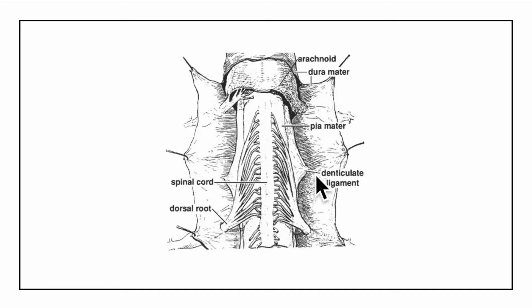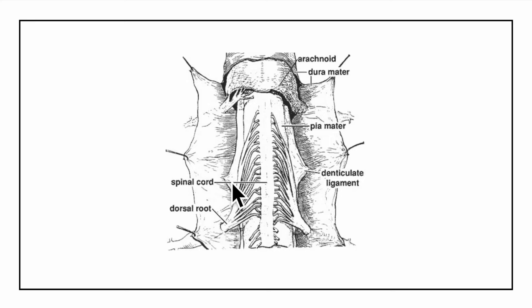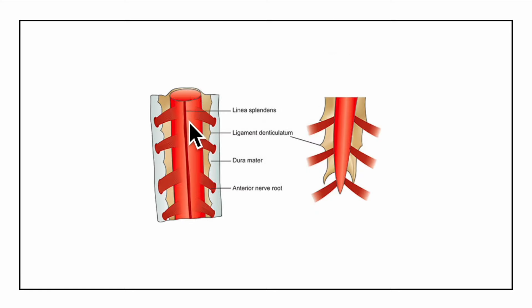The ligamenta denticulata, also known as the denticulate ligament, consists of 21 pairs of teeth-like projections. They fuse laterally with the arachnoid and the dura mater midway between the exits of the roots of adjacent spinal nerves. Here you can see the dorsal root of an adjacent spinal nerve and the denticulate ligament. This ligament keeps the spinal cord in position. Another modification is the linea splendens, a thickening seen at the anteromedian sulcus in the lower part of the spinal cord.